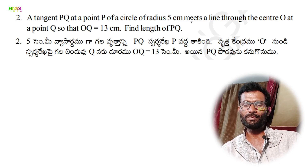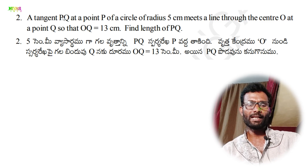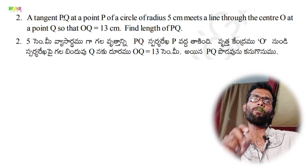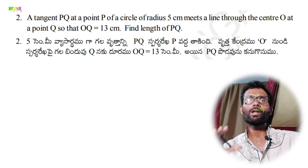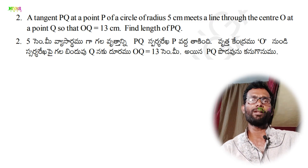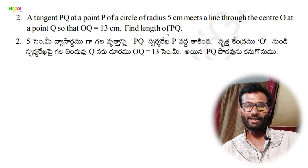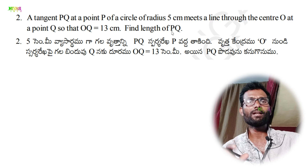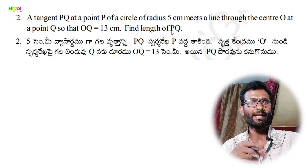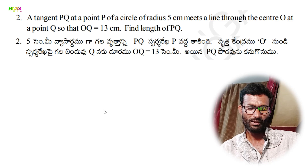The radius of the circle is 5 centimeters, center point O, and Q is an exterior point at 13 centimeters from the center. We need to find the length PQ. First, we draw a diagram with circle center O, radius 5 centimeters.